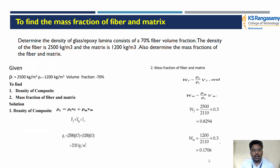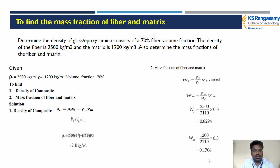To determine the density of a glass and epoxy lamina with 70% fiber volume fraction: the density of the fiber is 2500 kg/m³ and the matrix is 1200 kg/m³. Determine the mass fraction of the fiber and the matrix. Given: ρf = 2500 kg/m³, ρm = 1200 kg/m³, volume fraction Vf = 70%. We have to find three things: density of the composite, mass fraction of the fiber, and mass fraction of the matrix. The formula is: ρc = ρf·Vf + ρm·Vm.